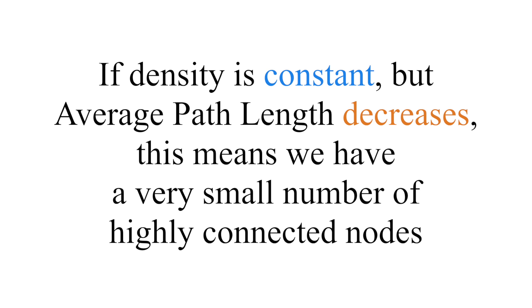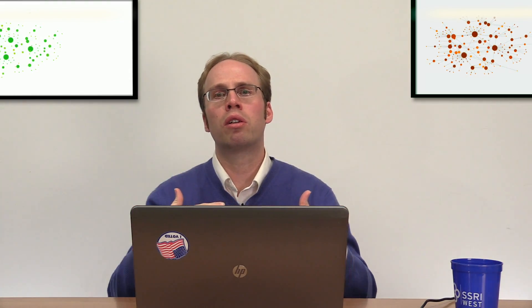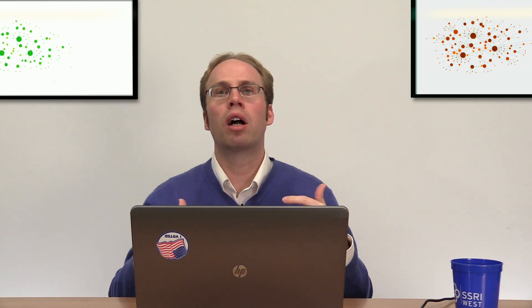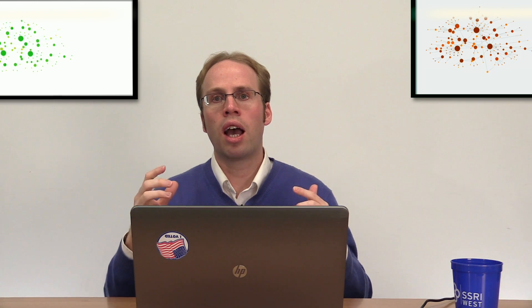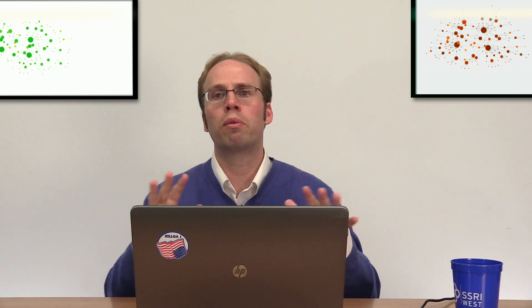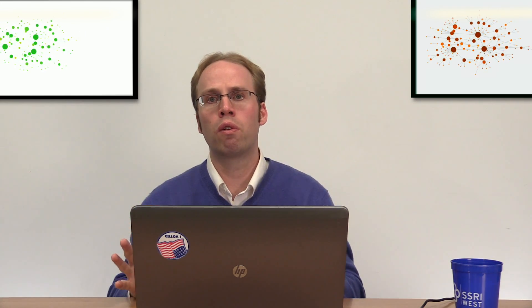I would also want the density to increase, not decrease or remain level. If the density remains the same but the average path length decreases, that means we're getting a couple of highly connected muckety-muck people — but that doesn't mean connections are happening globally overall. If I'm trying to get a denser, more collaborative relationship, I would want density to increase as average path length decreases, because that would mean uniformly more ties are being made. I don't want to look at any one measure as a criterion for success — I want to look at how these measures link together to tell me a story.